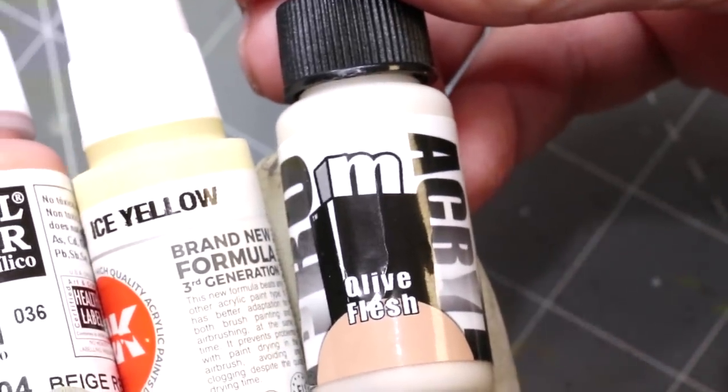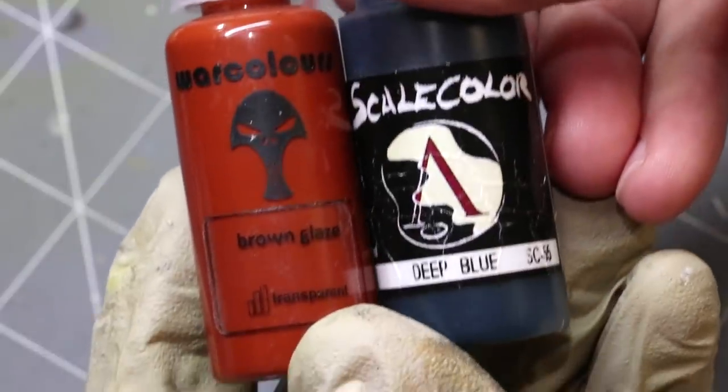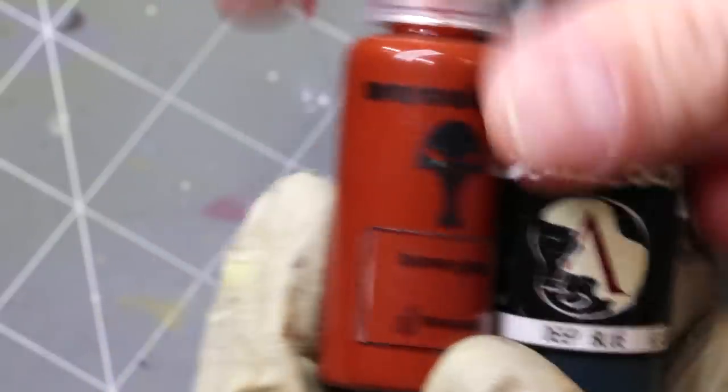And some olive flesh from Pro Acryl. Down in the darker colors we have some deep blue from Scale 75 and brown glaze from War Colors. Then I also have some retarder and some flow improver also from War Colors.